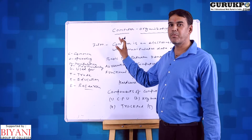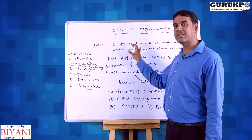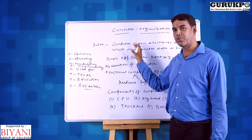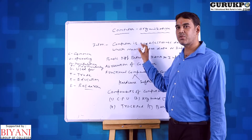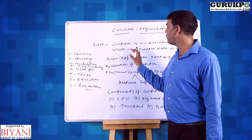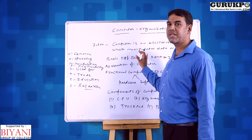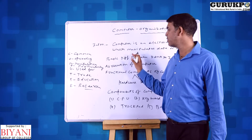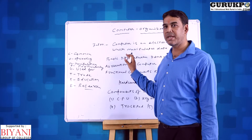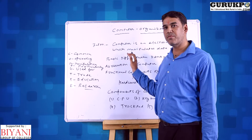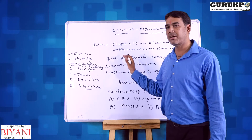What is the computer? The basic definition of computer: a computer is basically an electronic device which is used for manipulating data and information. We have the basic difference between data and information — data is raw fact and information is meaningful data.